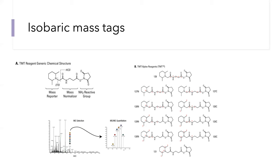In panel B, you can see how the distribution of heavy atoms changes across the structure of the molecule depending on the label. In one case, most of the heavy atoms are in the mass reporter; in another case, most are in the mass normalizer. When the molecule is intact, because the total number of heavy atoms is the same, the mass is the same. But when the molecule breaks at the positions indicated in panel A, the number of heavy atoms present in the reporter ion is different depending on the label — making these tags distinguishable by the mass spec analyzer. At the bottom left, a schematic shows a precursor ion containing all these different labels; when isolated and fragmented, it generates the distinct reporter ions indicated by the colored balls on the detected reporter ions.